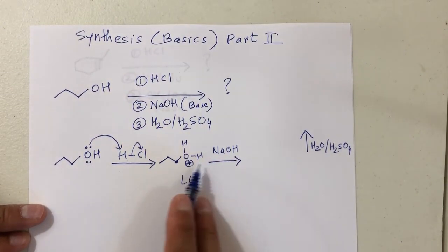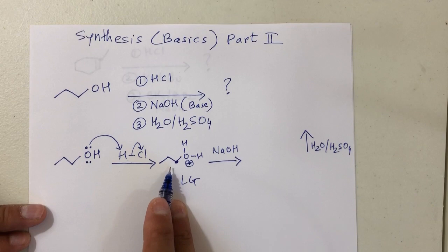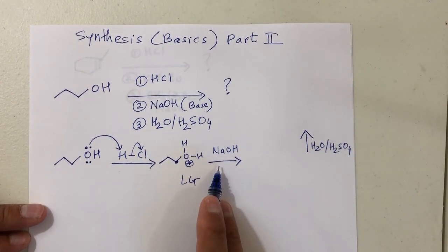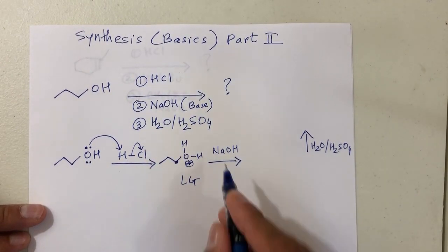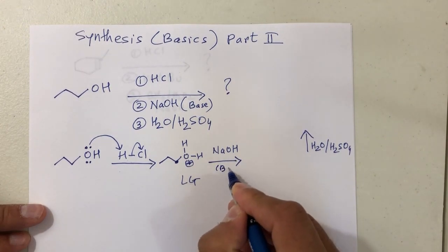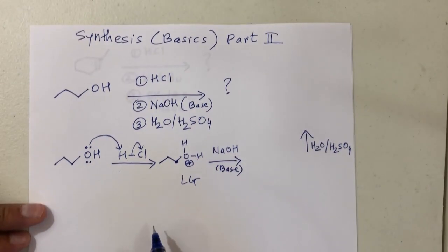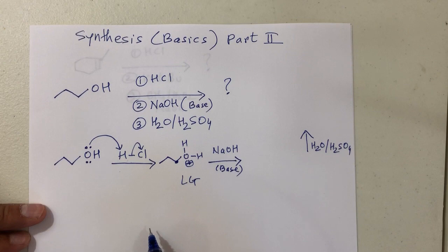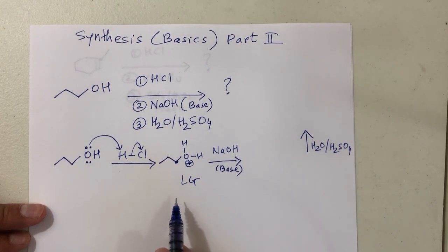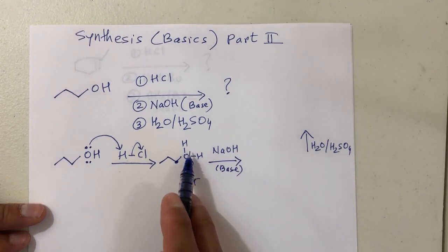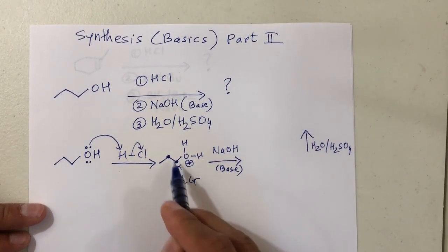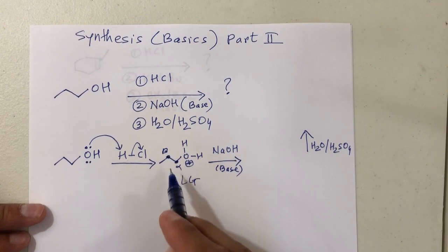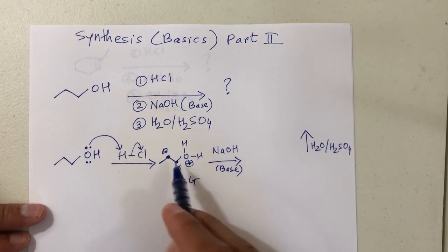Now you have a leaving group, and then the next step — that product will react with number two, which is NaOH. NaOH here is a base. The moment I hear the term as a base, it can do two things: it can do acid-base, or it can do elimination — but elimination only when you have a leaving group on the molecule. We have an alpha carbon with a leaving group and a beta carbon with at least one hydrogen. So we should be able to do elimination here.